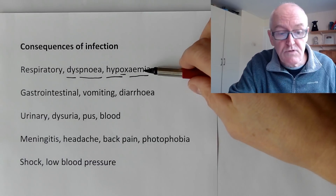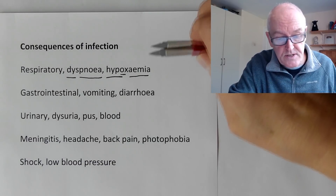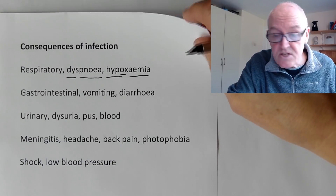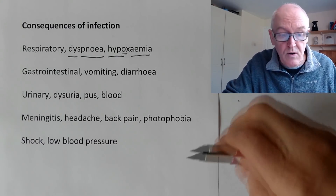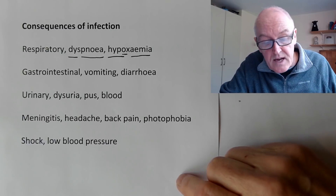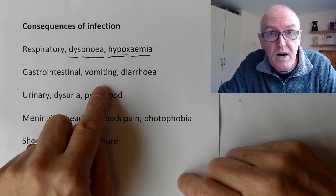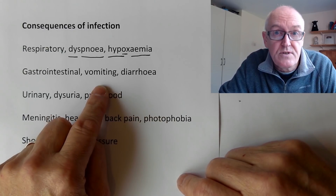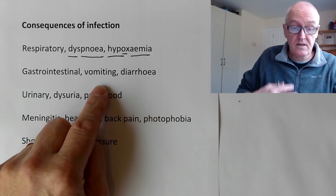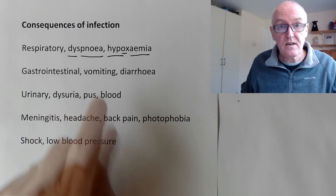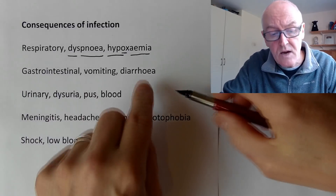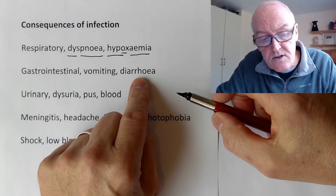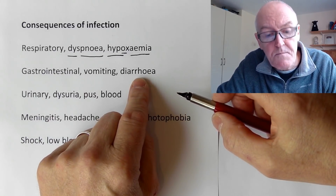So upper or lower respiratory infections can both occur. Gastrointestinal infections, again, can be upper or lower. If they're affecting the upper part of the gastrointestinal tract - the gut - then that can cause vomiting. In the lower part, very often it causes diarrhea.